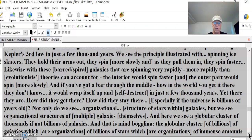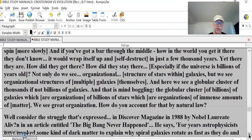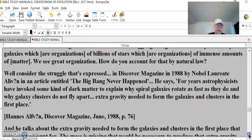Not only do we see organizational structure of stars within galaxies, but we see organizational structures of multiple galaxies themselves. Here we see a globular cluster of thousands, if not billions, of galaxies. That is mind-boggling. The globular cluster of billions of galaxies, which are organizations of billions of stars, which are organizations of immense amounts of matter. I couldn't even begin to calculate. You'd never get finished adding. We see great organizations. How do you account for that by natural law?